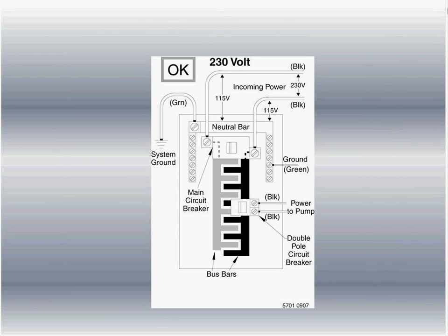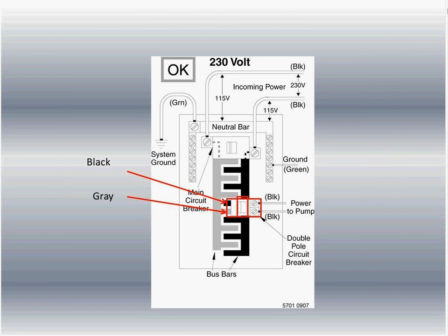When you're going 230 volts, things change a little bit. We're going to recommend you use something called a double pole, single throw breaker. Double pole means we're connected to both the black and the gray bus bar — by connecting both bus bars, now we're going to get 230 volts. Single throw means there's one switch, and when that switch turns off, it kills both of them — turns both off.